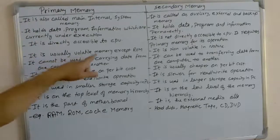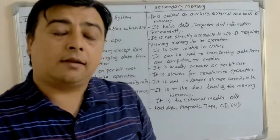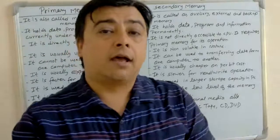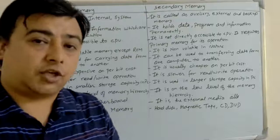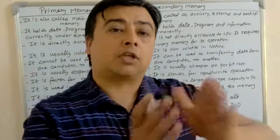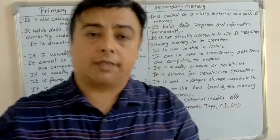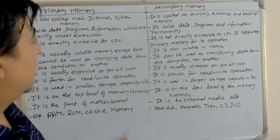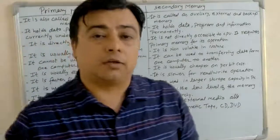Primary memory is usually volatile memory, except ROM. Volatile means those memory which store data for a short period of time, or until the power is on. After the power supply is off, all the data stored in primary memory is lost — that's why it is volatile in nature.